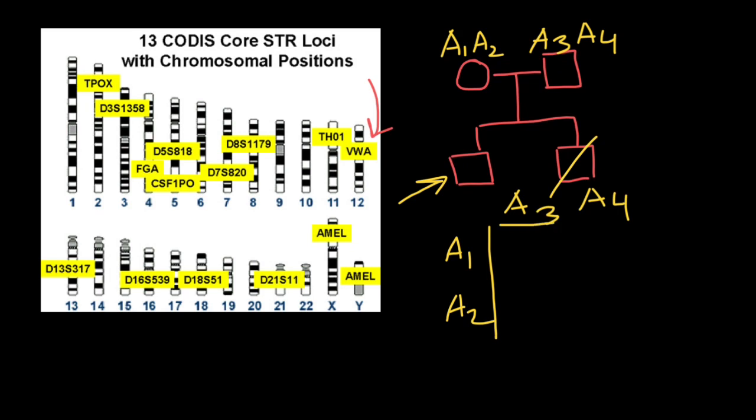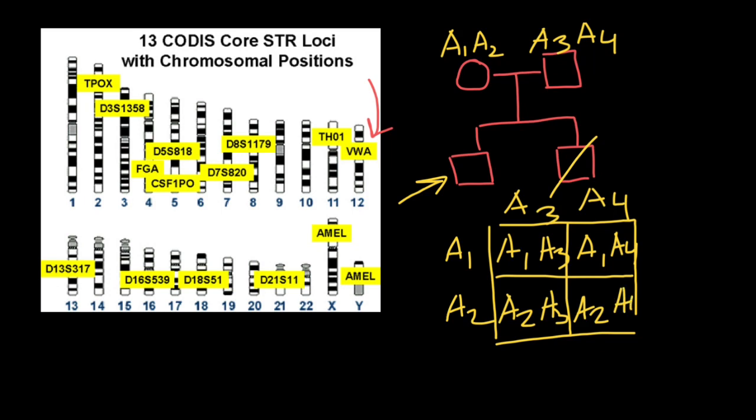Here's the genotype of the mother A1 and A2, and here's the genotype of the father A3 and A4. Let's build a simple Punnett square and take a look at the possible genotypes in the progeny: A1 A3, A2 A3, A1 A4, and A2 A4. As you see, four different genotypes are possible.